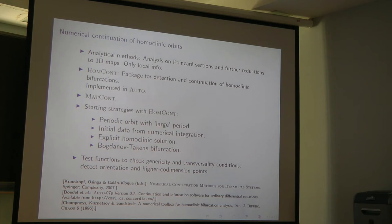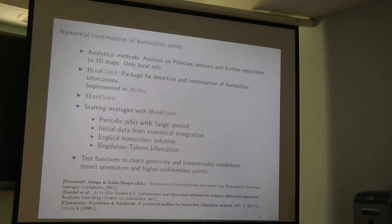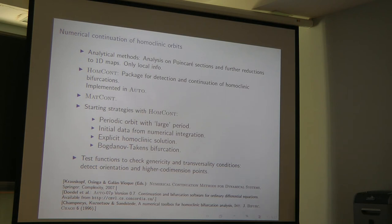Here is a fundamental dilemma: for global bifurcations and homoclinic bifurcations in general, one cannot find a normal form for the entire object in phase space. Typically in analytical approaches, one takes a local section and studies how orbits return near the equilibrium in a tubular neighborhood of the homoclinic orbit, then takes further reductions to 1D maps to analyze chaos. But this gives only local information — it does not tell us what happens outside a sufficiently small neighborhood.